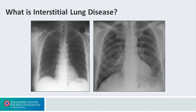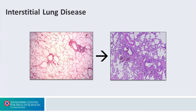Sometimes the upper lobes might be more involved, sometimes the lower lobes, but invariably it is a form of diffuse parenchymal lung disease. On this slide, we have a demonstration pathologically of what normal alveoli look like, and to the right we have changes that might be seen with various forms of interstitial lung disease, where there are diffuse fibrotic changes present through the lung.